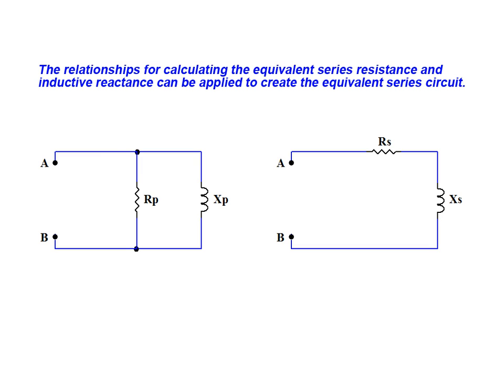The required series resistance value can be determined by using the parallel resistance and parallel reactance along with the relationship shown here. Using these same two values, we can also calculate the required reactance for our series equivalent circuit by using this second relationship.